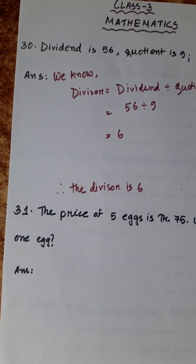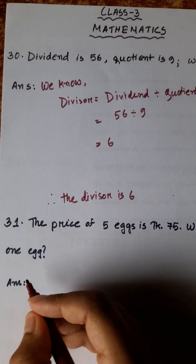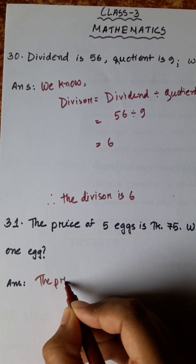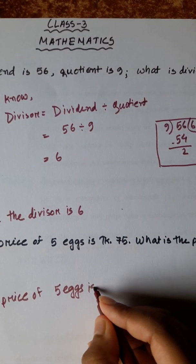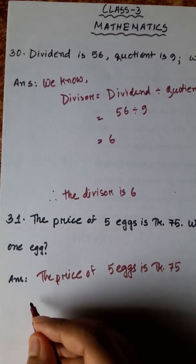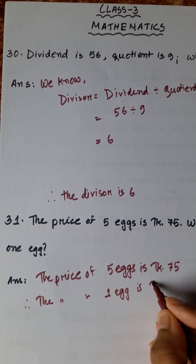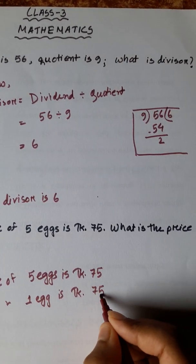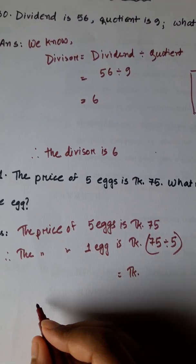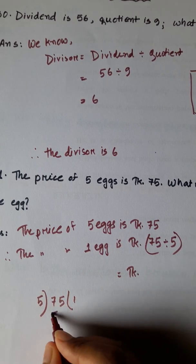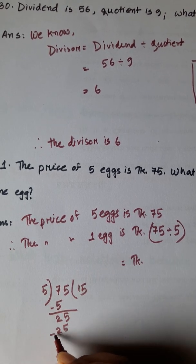Number 31: the price of 5 eggs is taka 75 — what is the price of 1 egg? The price of 5 eggs is taka 75, so the price of 1 egg is taka 75 divided by 5. 5 into 75: 5 twos are 10, bring down 5, 5 fives are 25. The answer is taka 15.